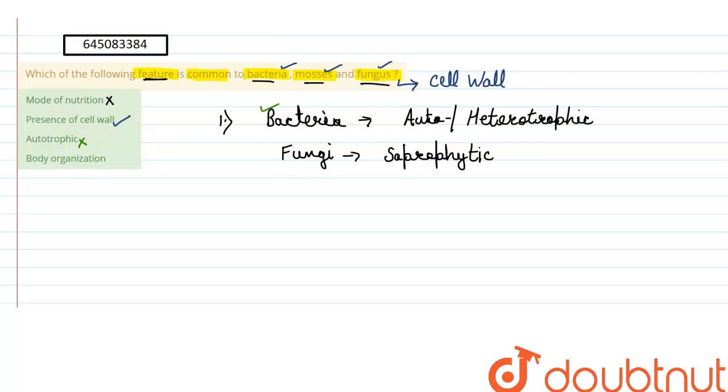And last one is body organization. This would also be wrong because bacteria are unicellular organisms—there is no level of body organization in them. So the last option would also be wrong. The only common feature is the presence of cell wall, therefore this would be the right answer.